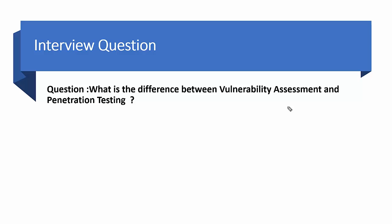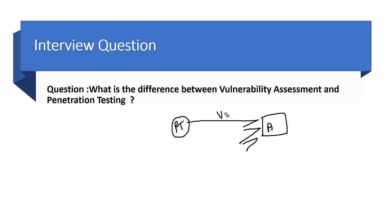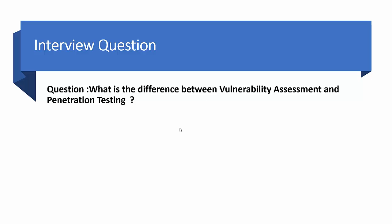Vulnerability assessment is the process of identifying known vulnerabilities, while penetration testing is about exploiting those vulnerabilities and getting into the system. For example, a red team guy identifies weaknesses in the system — like weak passwords or open ports — that is VA. But in PT, we exploit that vulnerability and penetrate into the system. So discovering the weak password or open port is VA, but exploiting that open port and penetrating the system is PT.